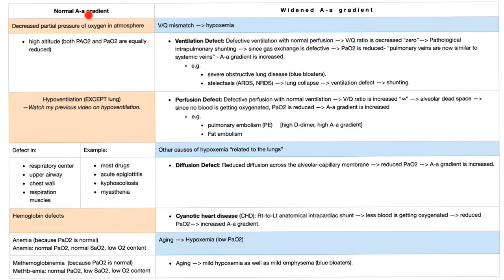Here is the normal AA gradient and here is a widened AA gradient. A normal gradient means the problem is anything outside of the lung: decreased partial pressure of oxygen in the atmosphere (not the lung's fault), hypoventilation (not the lung's fault), and hemoglobin defects (not the lung's fault). Decreased PIO2 such as high altitude, hypoventilation — every defect except a lung defect.